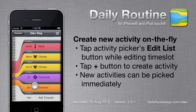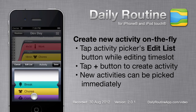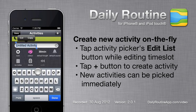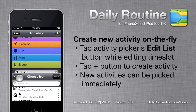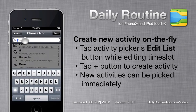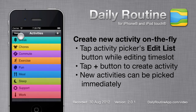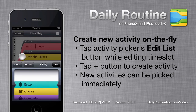While filling up our routine, we may realize we need to create a new activity. To do so, tap the Edit List button inside the activity picker. Here we can edit or delete existing activities, or create new ones. Tap the plus button to create a new activity, give it a name and an icon, then tap Done and we can pick our new activity.